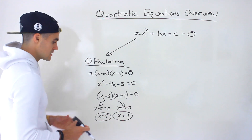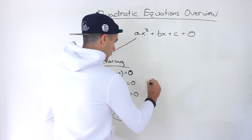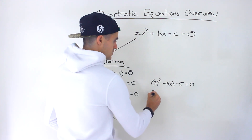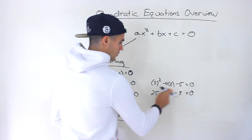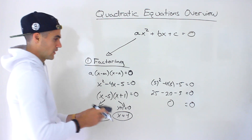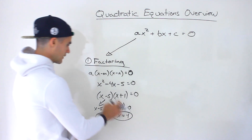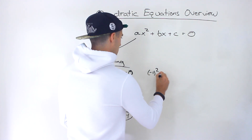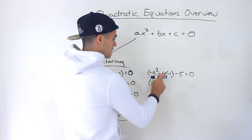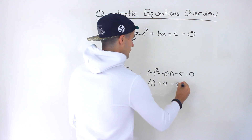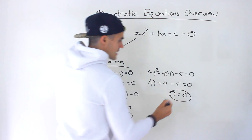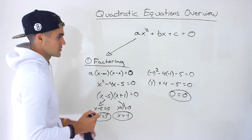You can check these solutions. If we plug in x = 5: the left side would be 5 squared minus 4 times 5 minus 5, which is 25 minus 20 minus 5, giving us 0. The left side equals the right side. And if we plug in negative 1: negative 1 squared minus 4 times negative 1 minus 5 equals 1 plus 4 minus 5, which is 0. We end up with the left side equaling the right side again. So there are two solutions.